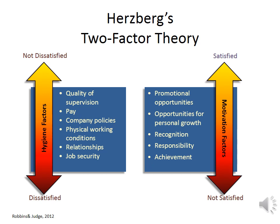Herzberg's two-factor theory states that satisfaction and dissatisfaction are not opposites, but two separate ideas. There are a set of factors that when present will help to avoid dissatisfaction in workers — this group includes things such as salary, working conditions, and company policies. There is another set of factors called motivators that when present will cause satisfaction, including growth, responsibility, and achievement.